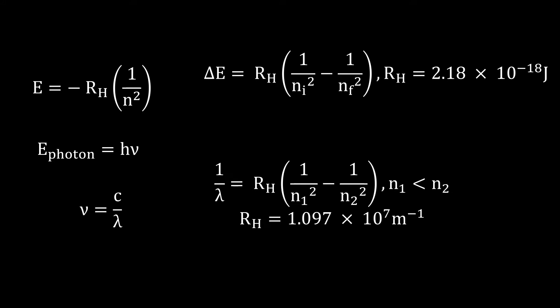These are the formulas that I introduced in my previous video when I explained about Bohr's Atomic Postulate. The first formula is used to calculate the energy of an electron at a particular orbit or energy level. The rest of the formulas are used to calculate the energy of a photon, the energy difference, or even the frequency and wavelength of the photon involved due to electron transitions between orbits or energy levels.